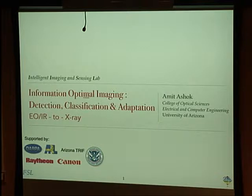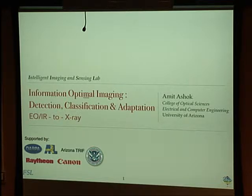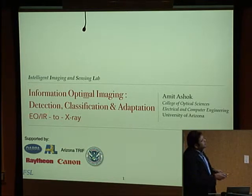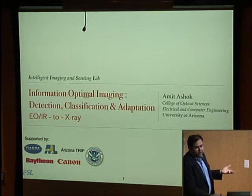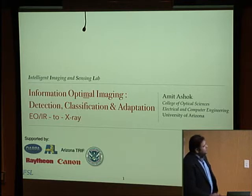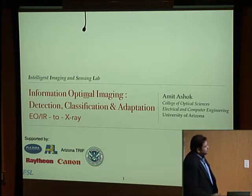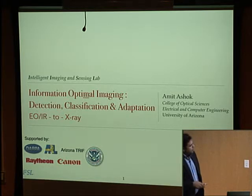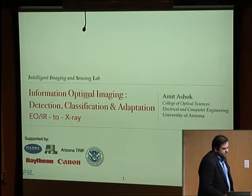The topic of my talk today is information-optimal imaging — and that M is supposed to be there, it's not optical. For people familiar with entropy, the entropy of that letter is pretty high; if you flip it, it changes the meaning quite drastically. I'll talk about information-optimal imaging, introduce what I mean by information in a very rigorous sense, its application to detection and classification tasks, and then this idea of adaptation using information-theoretic design measures — somewhat distinct from adaptive optics in astronomy, but the basic idea is the same. I'll illustrate it through applications spanning from visible IR to X-rays.